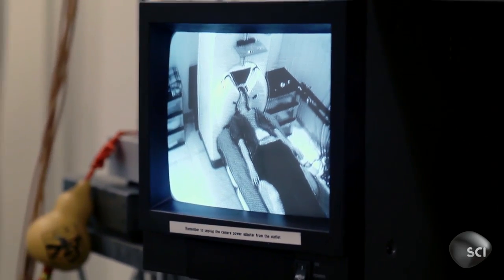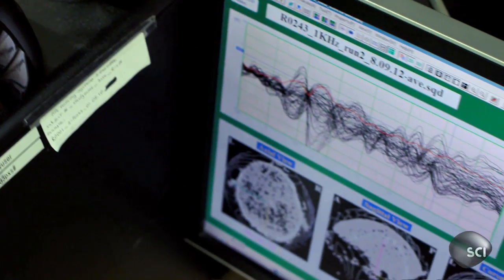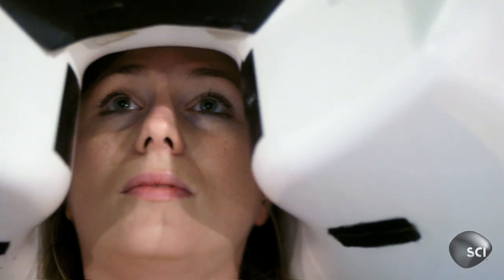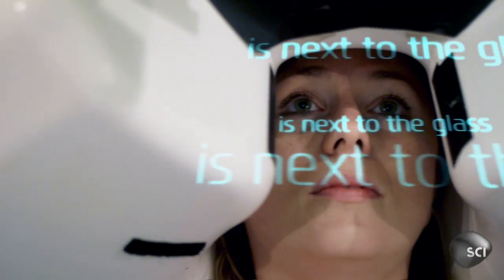The MEG has a built-in helmet of 160 magnetic field detectors that scan and record the subject's brainwaves every time she imagines a given word. The book is next to the glass.